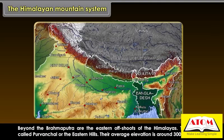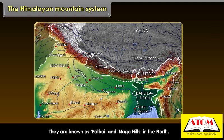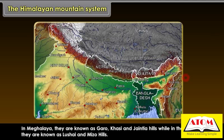Beyond the Brahmaputra are the eastern offshoots of the Himalayas, called Purvanchal or the eastern hills. Their average elevation is around 3,000 meters. They are known as Patkai and Naga hills in the north. In Meghalaya, they are known as Garo, Khasi and Jaintia hills, while in the south they are known as Lushai and Mizo hills.